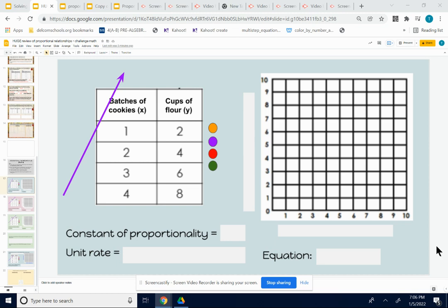This is slide 17. We're going to look at a proportional relationship. We're going to review the constant of proportionality and the unit rate, but we're also going to look at the graph and the equation. So let's just work through this problem.